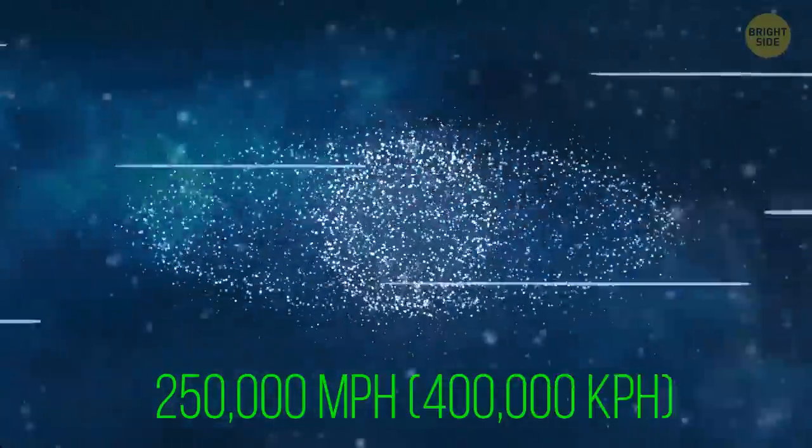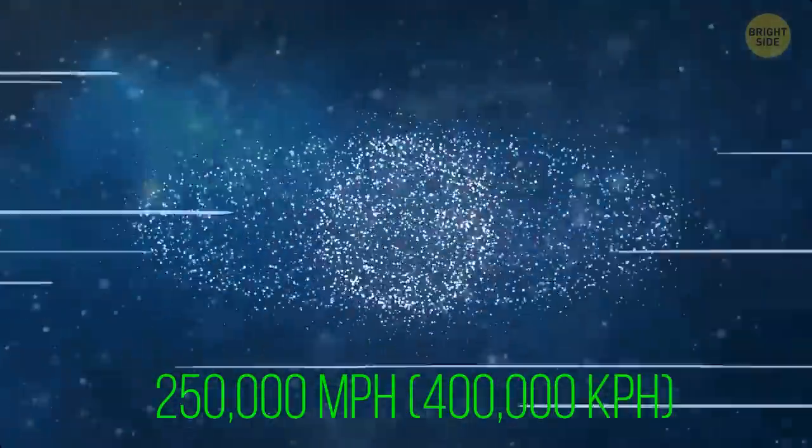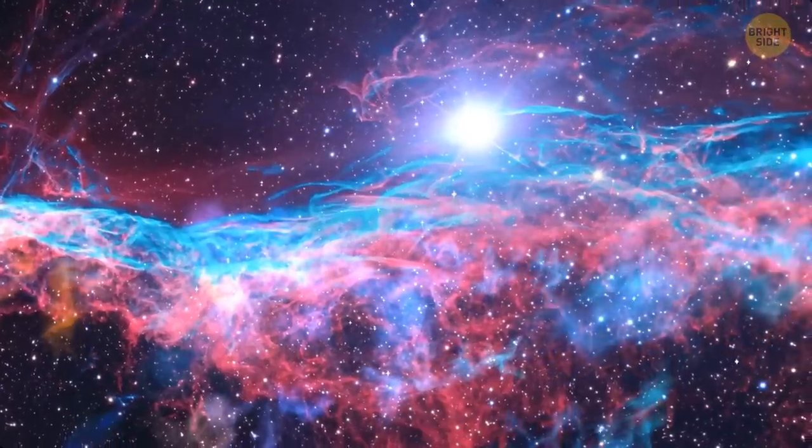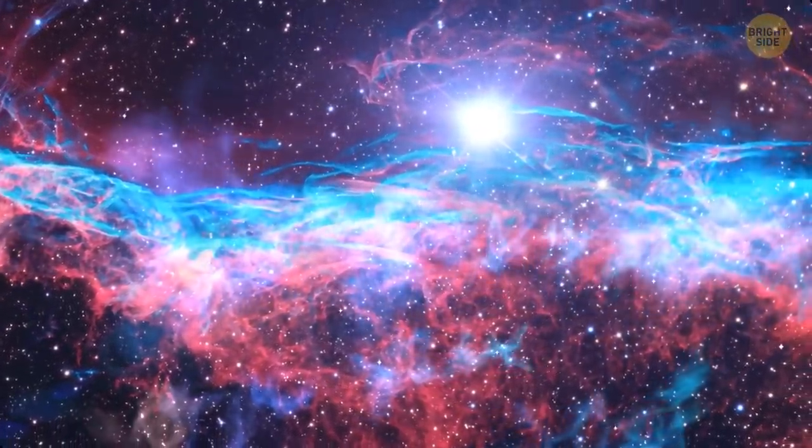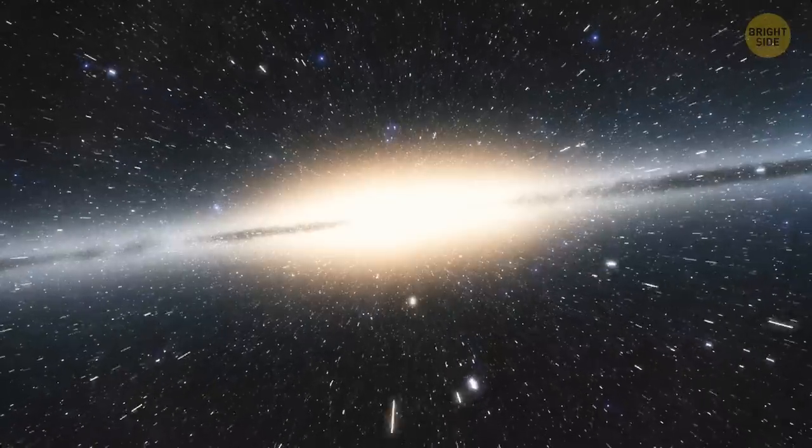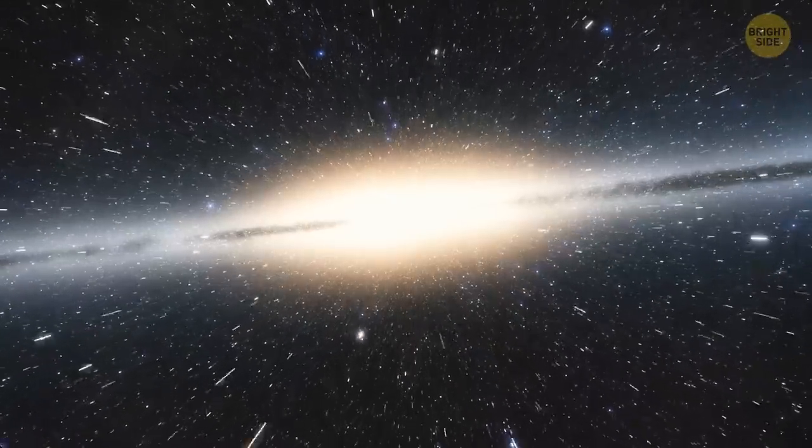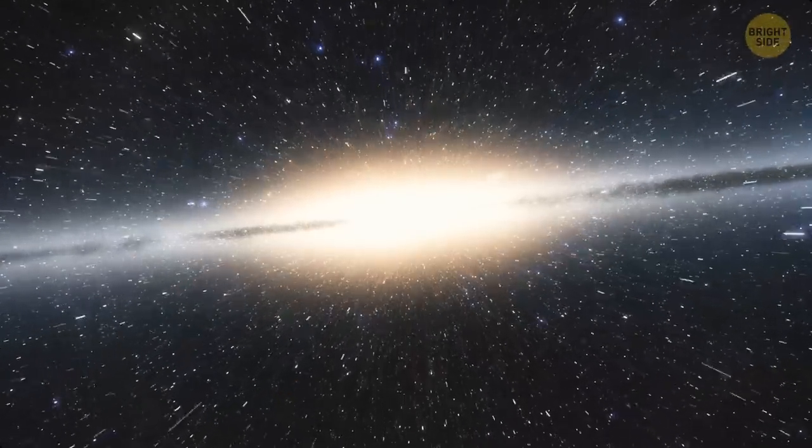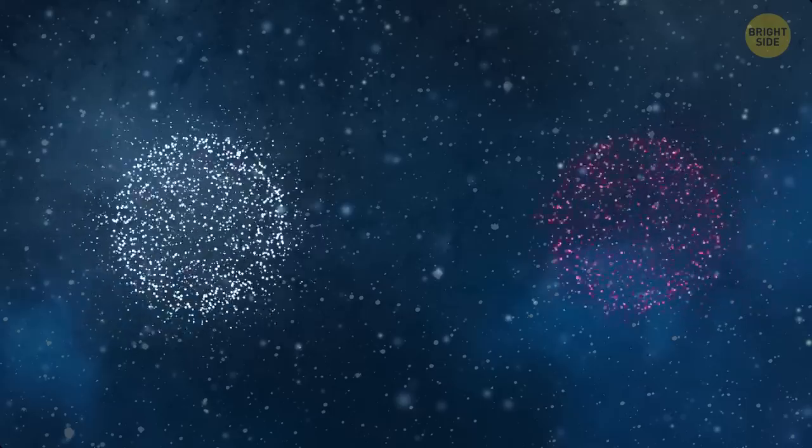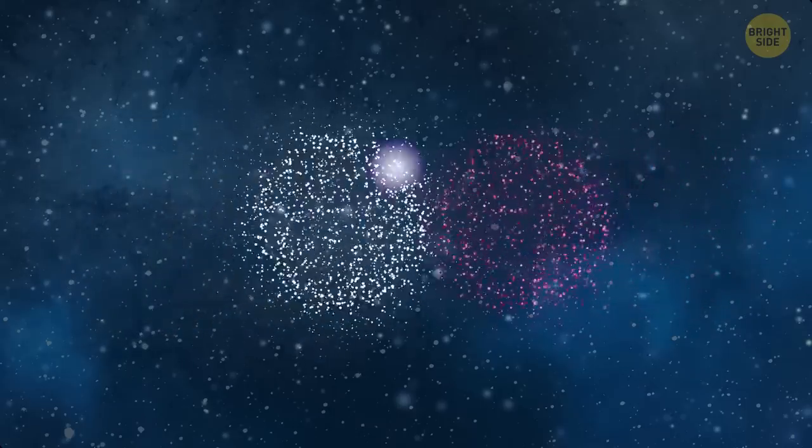250,000 miles per hour seems a pretty high speed at which to have a collision. That's the speed spectroscopic measurements of the blue shift of Andromeda indicate. It's gonna be a big mess when it happens. But when is it going to happen? To determine when the two galaxies will collide, we need to determine the distance between them. And for that, we need supernovas.